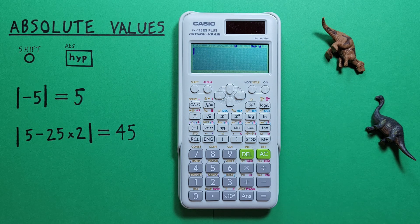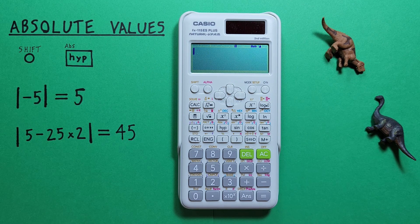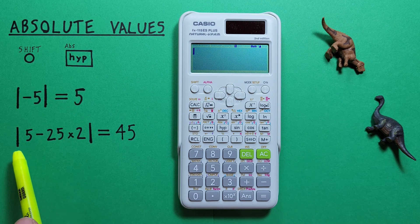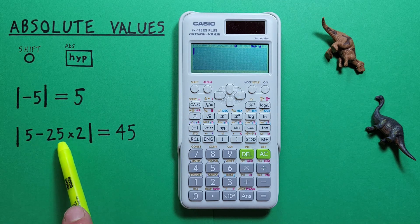We can also get the absolute value of the result of equations. For example, if we had the absolute value of 5 minus 25 times 2.